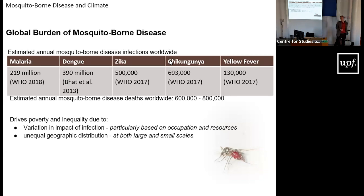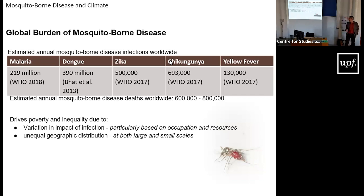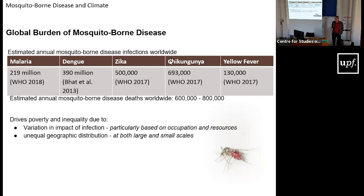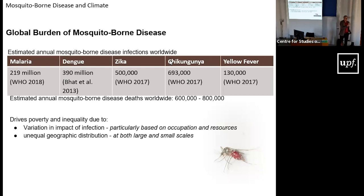Dengue is the other disease with high numbers of concern worldwide. Estimates vary considerably — the high-end estimate from 2013 is 390 million cases worldwide, though that includes unconfirmed cases. Zika, chikungunya, yellow fever, and a host of other mosquito-transmitted diseases have gained attention in recent years because these are the ones that tend to be on the rise. While malaria has been decreasing, dengue, Zika, chikungunya, and the others have been rising with the spread of the particular mosquitoes that transmit them.